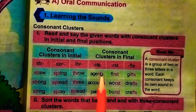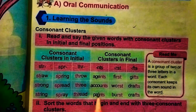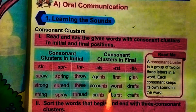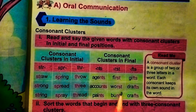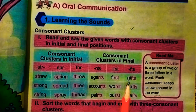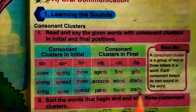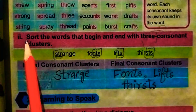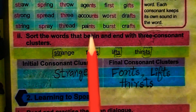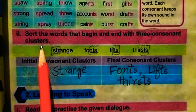Now the final position consonant clusters: agents, accounts, paints, first, worst, burst, gifts, drafts, crafts. The next question asks us to sort the words that begin and end with three consonant clusters.